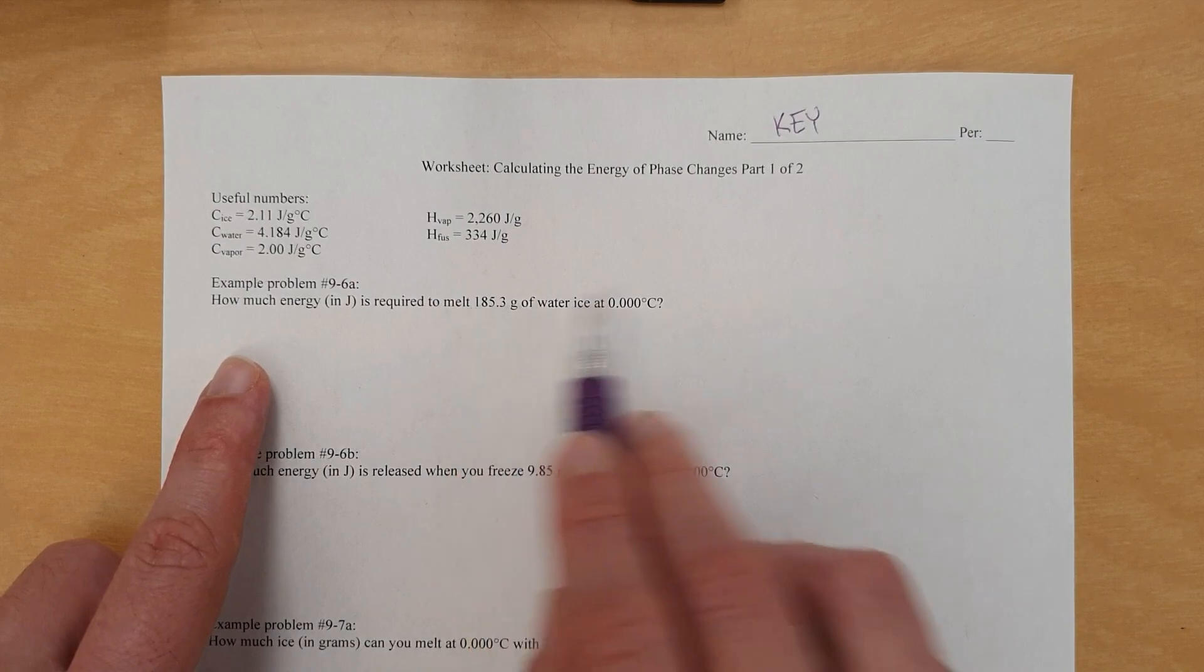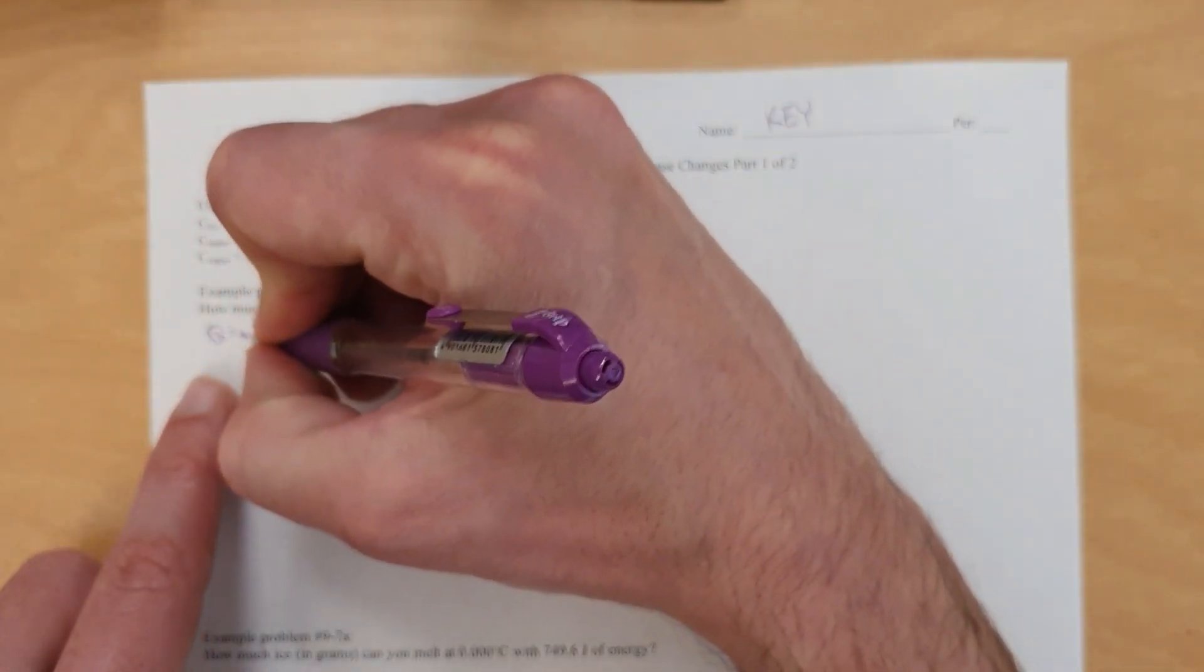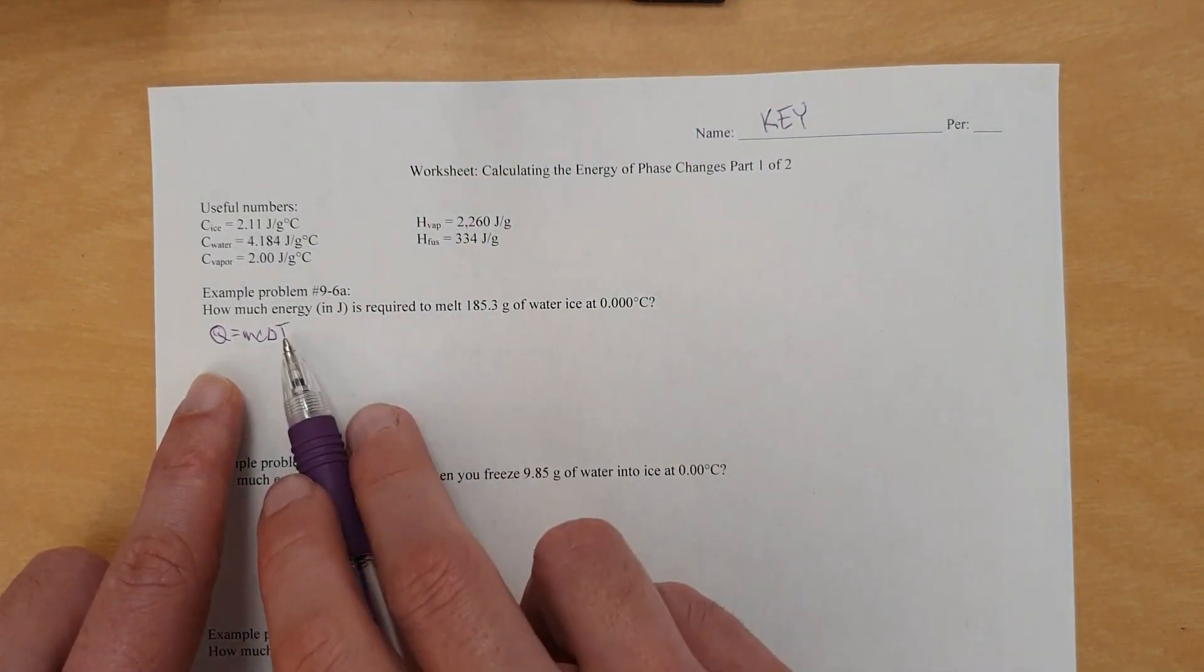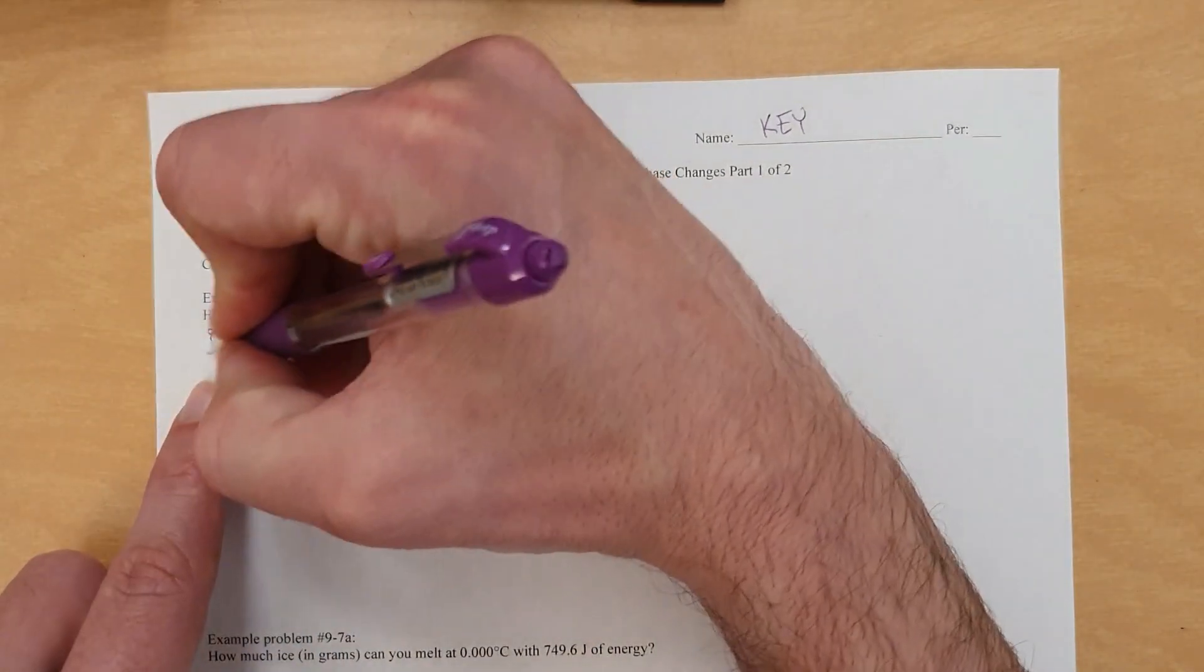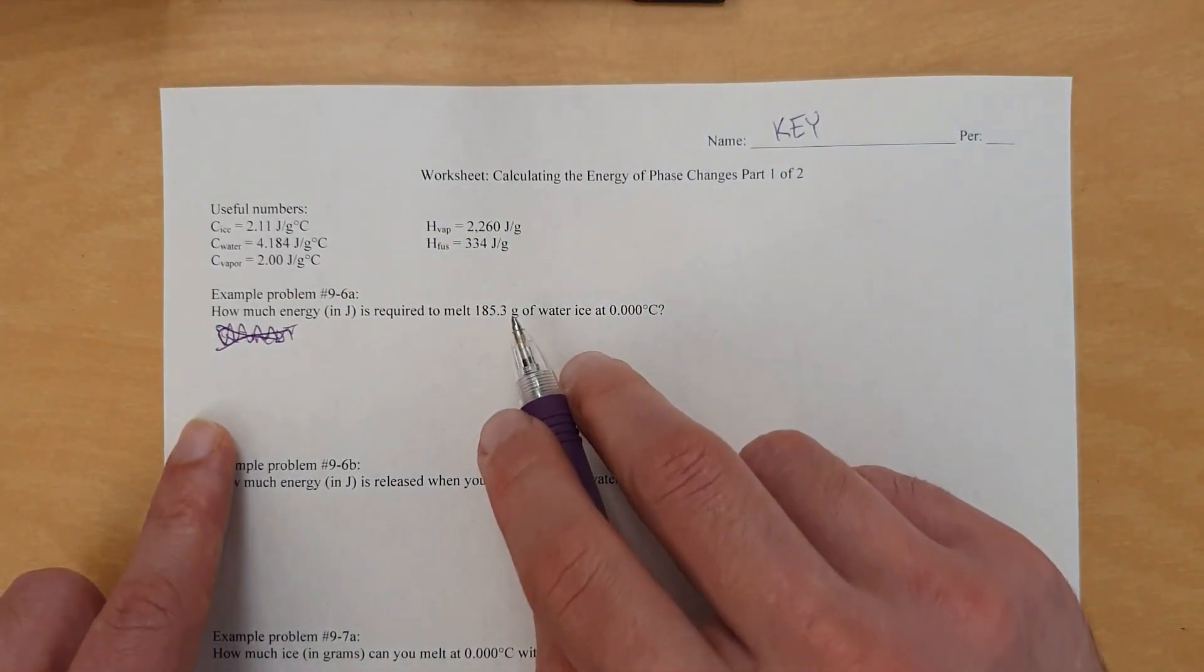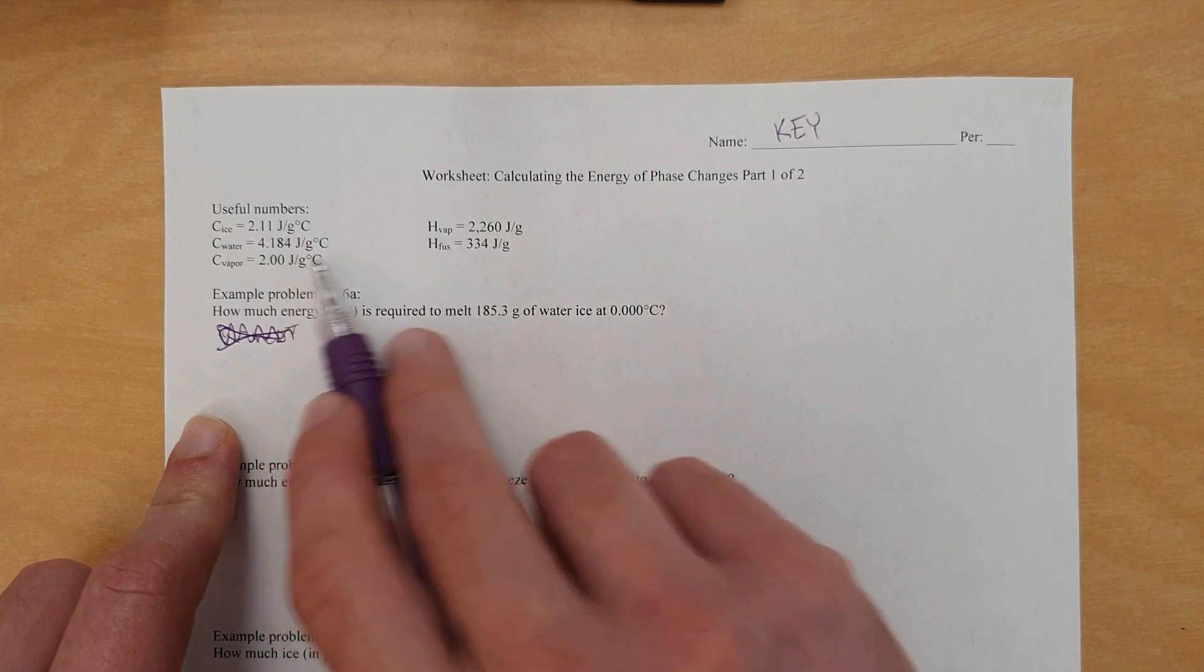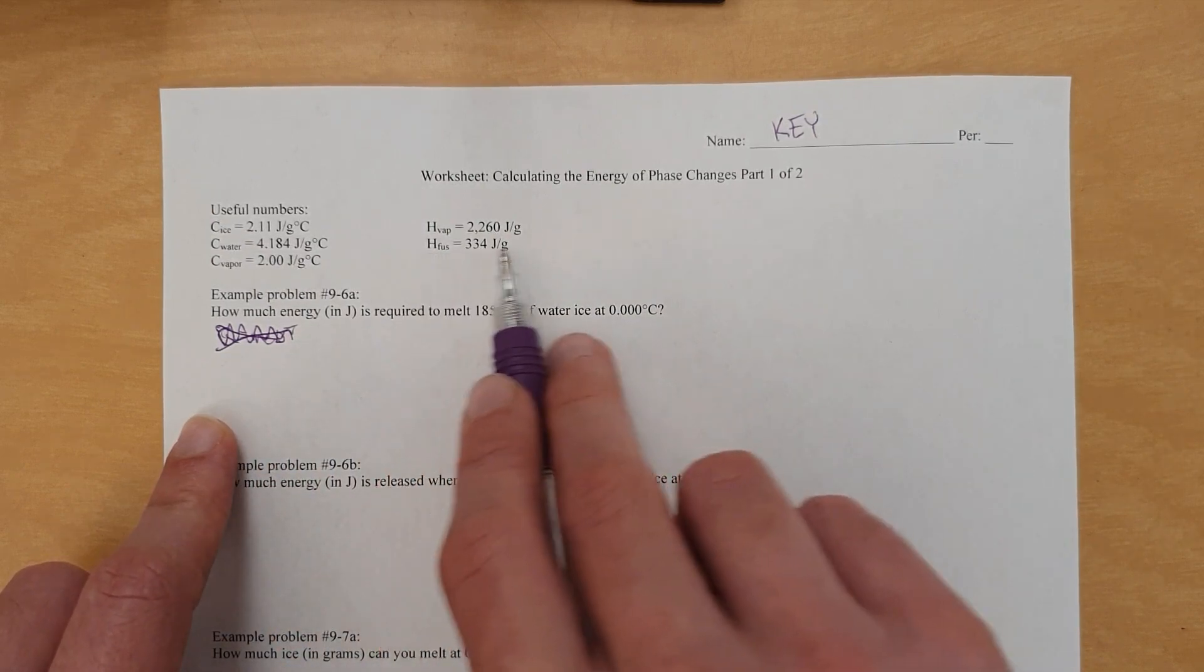Now understand, temperature is not changing. You're just doing a phase change because melting is a phase change. When you do a phase change, temperature stays the same, which means Q equals MC delta T will not work because your delta T is zero. Temperature is at zero degrees and staying at zero degrees, so it's not changing, which means this does not work. Don't even try to use it.